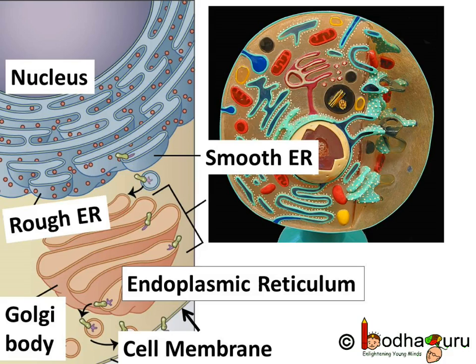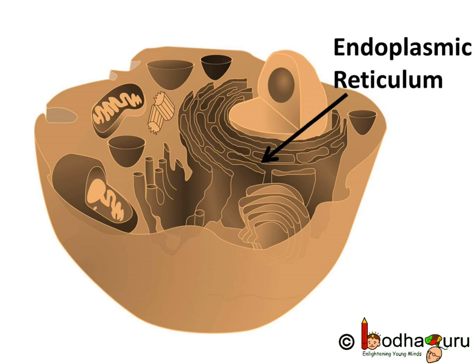Can you believe the greatest network of factories is inside your tiny cells? To sum up what we learnt, endoplasmic reticulum is a membrane-bound organelle which acts both as a passageway for intercellular transport and also as a manufacturing surface for proteins and lipids.